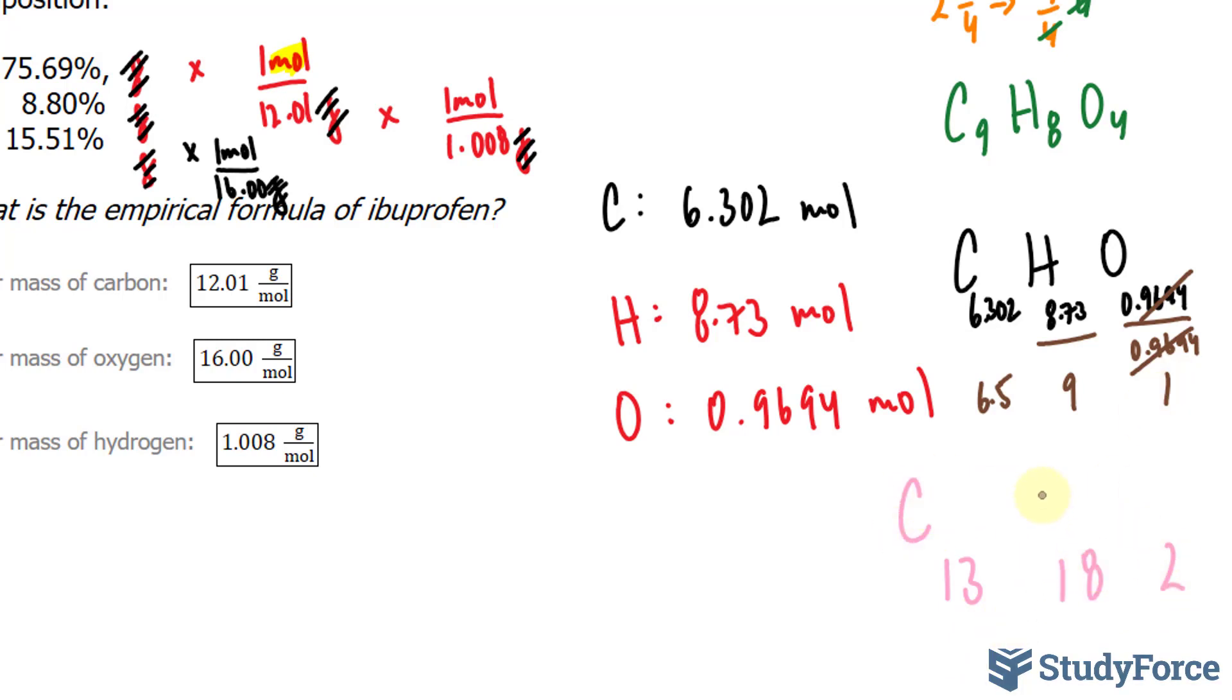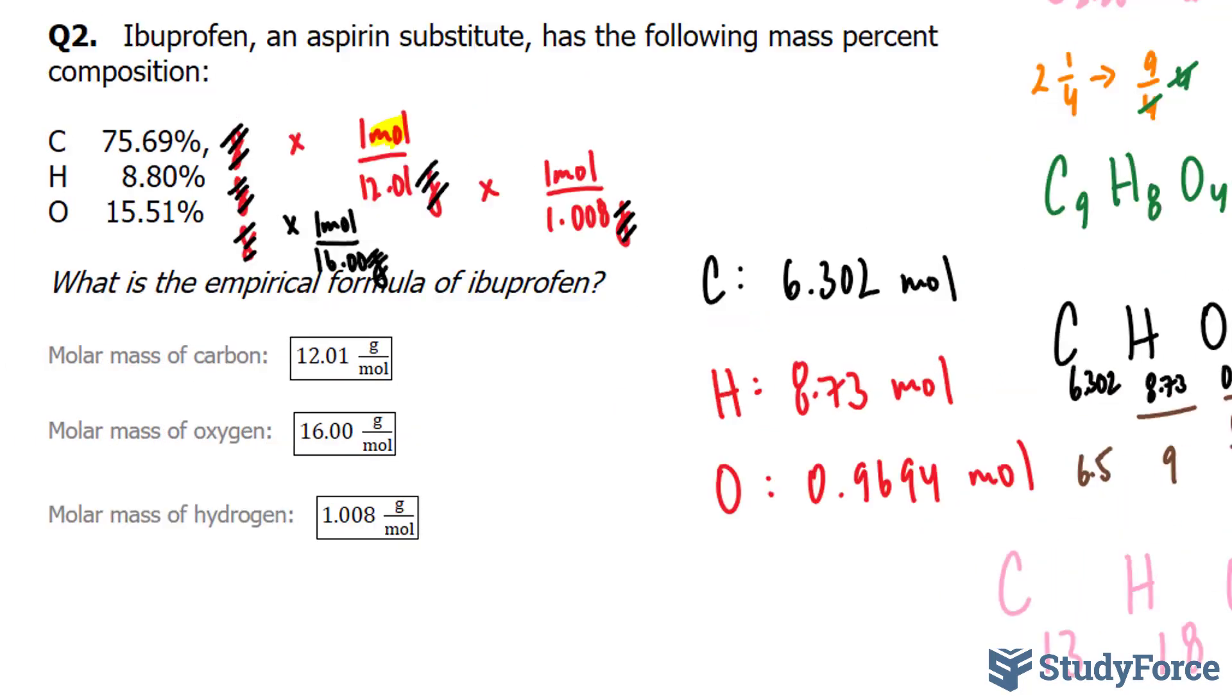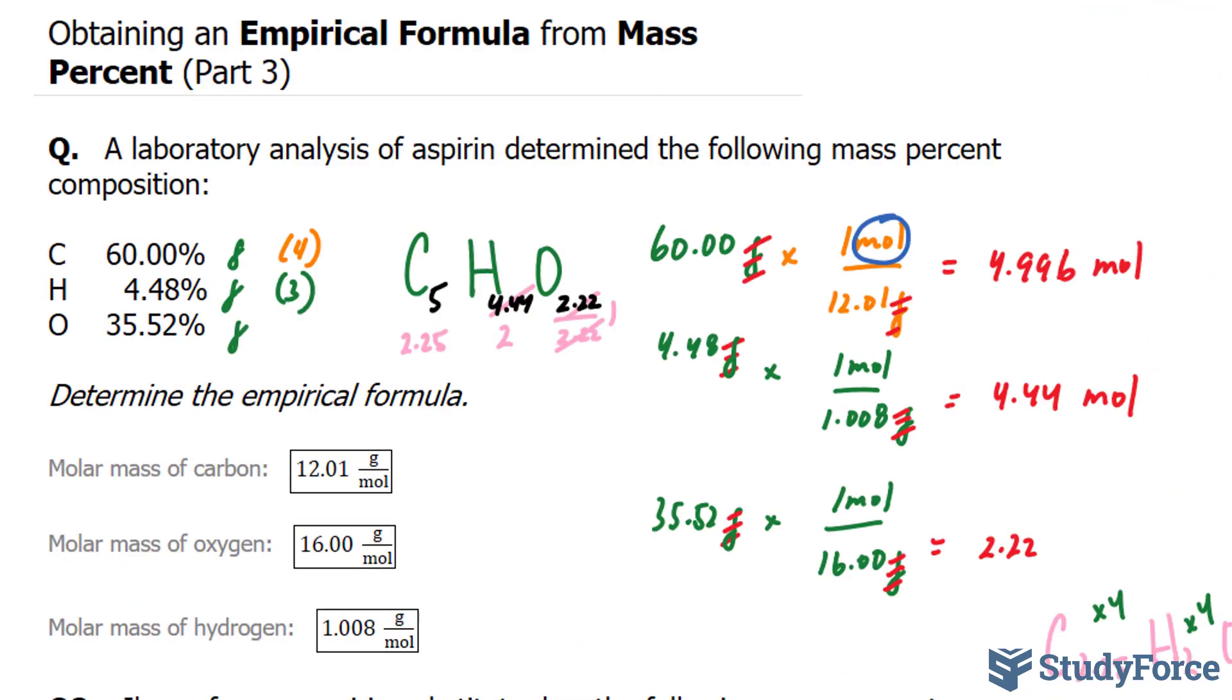So we have C13H18O2. And there you have it. That is how to obtain an empirical formula from mass percent.